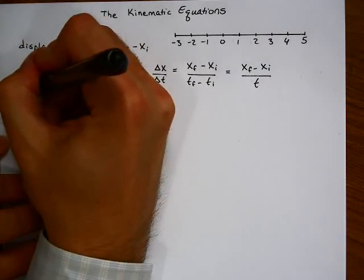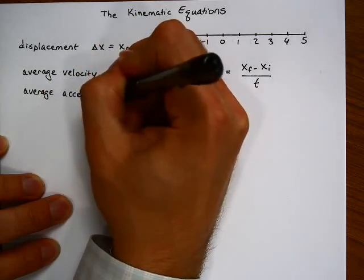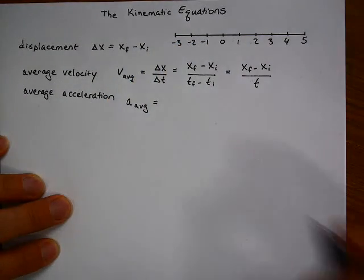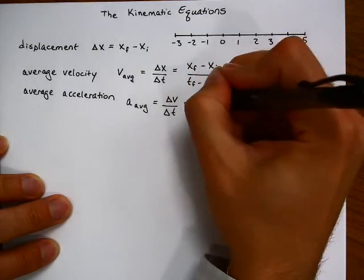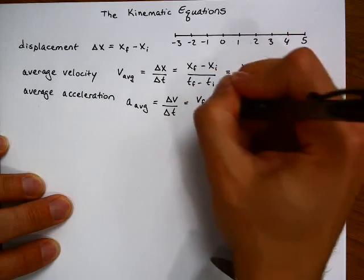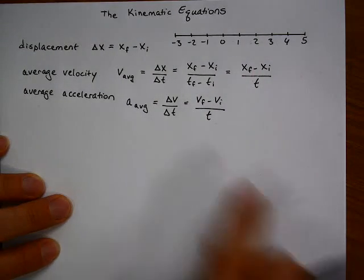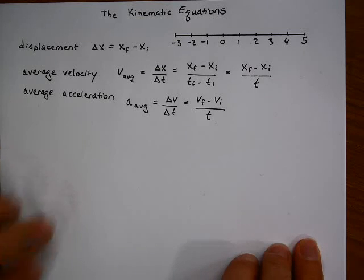We also have average acceleration, and that is equal to change in velocity divided by change in time. Final velocity minus initial velocity divided by T. This is an abbreviation for Tf minus Ti. Whenever we have a change in a variable, notice that it is always the final value minus the initial value. That guarantees that our answer has the correct sign indicating the correct direction.